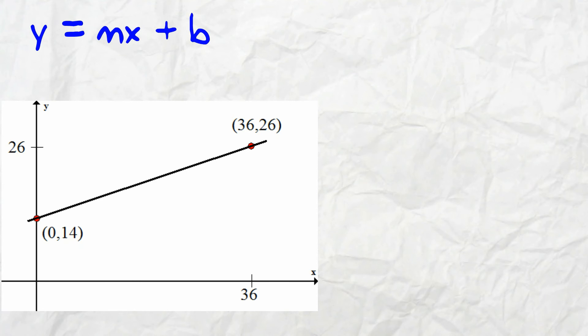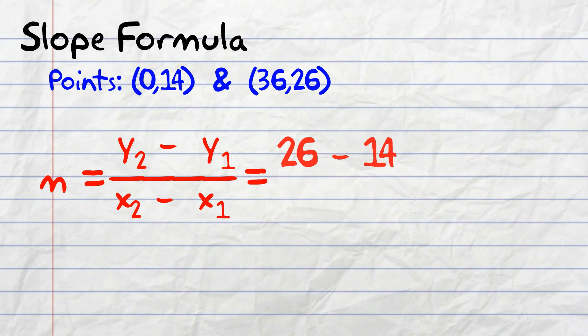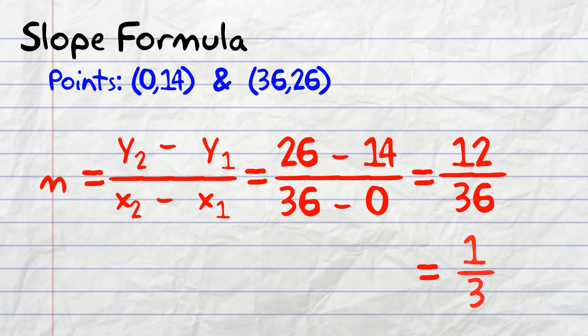I have the following two points: 0 comma 14 and 36 comma 26. To find m, I use the slope formula. 26 minus 14 divided by 36 minus 0. That's going to equal 12 divided by 36, which when reduced equals 1 over 3.